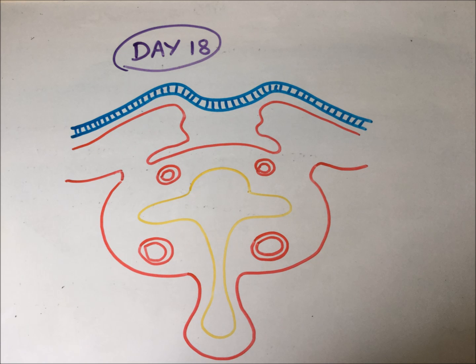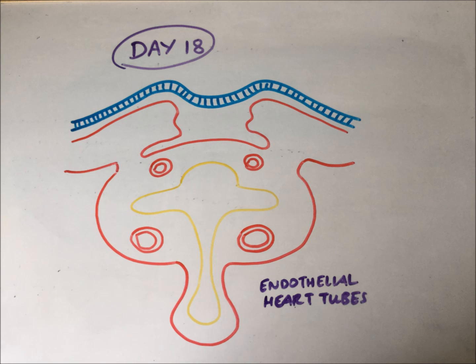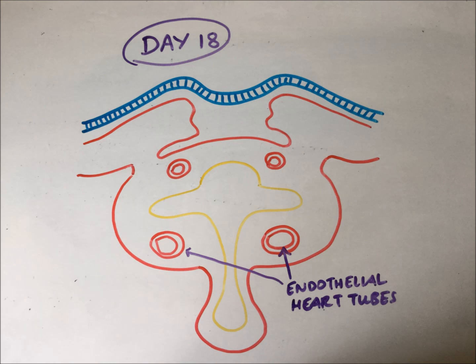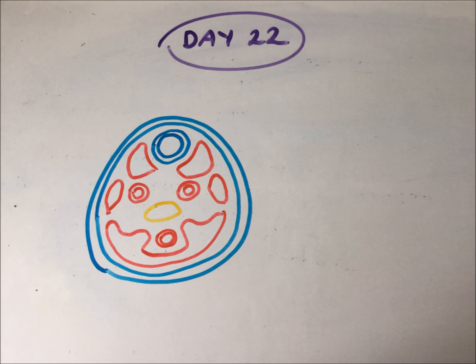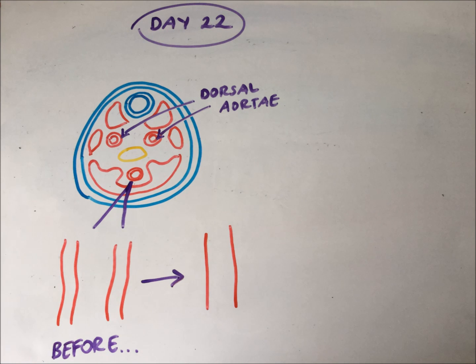At day 18 they've gathered there as separately contained and individual heart tubes. And later on they'll get it on with dorsal aortae and the whole thing will begin to fuse.